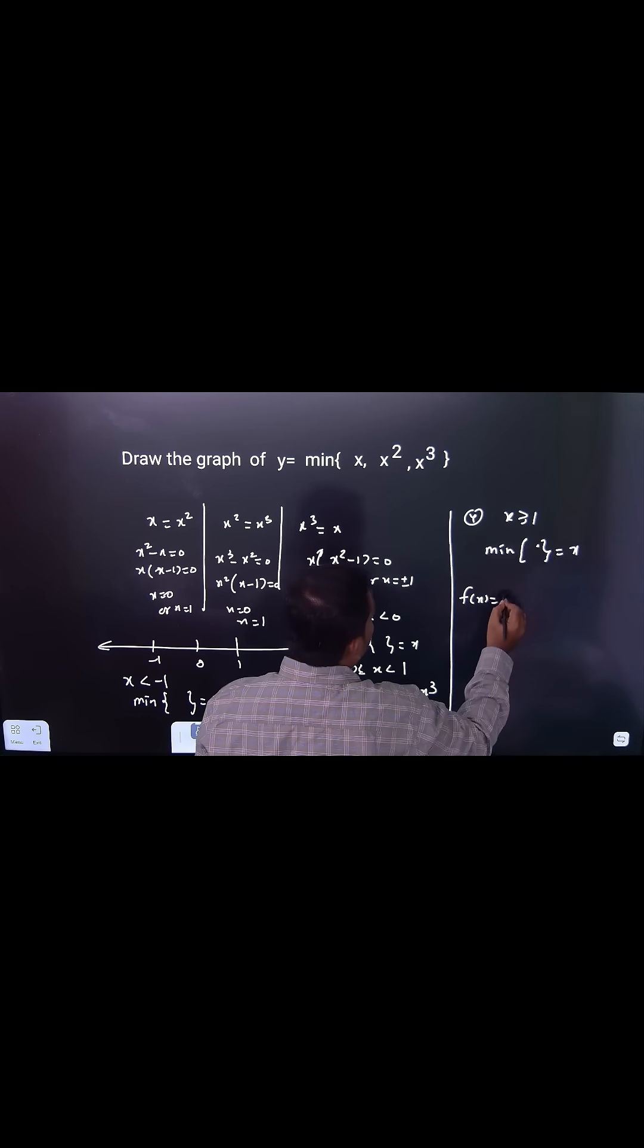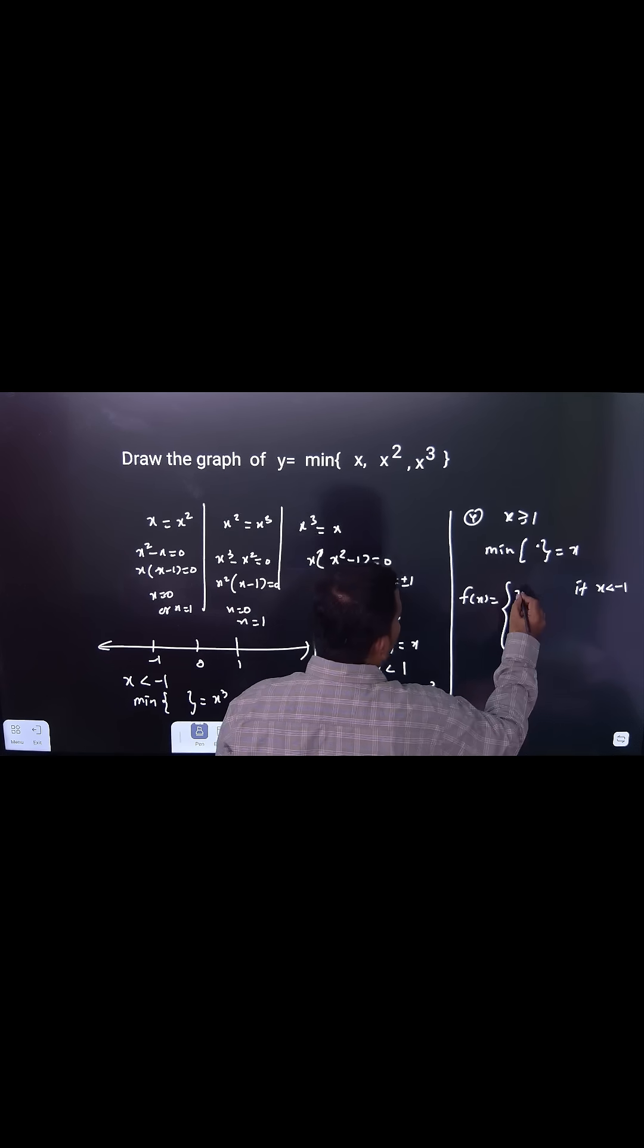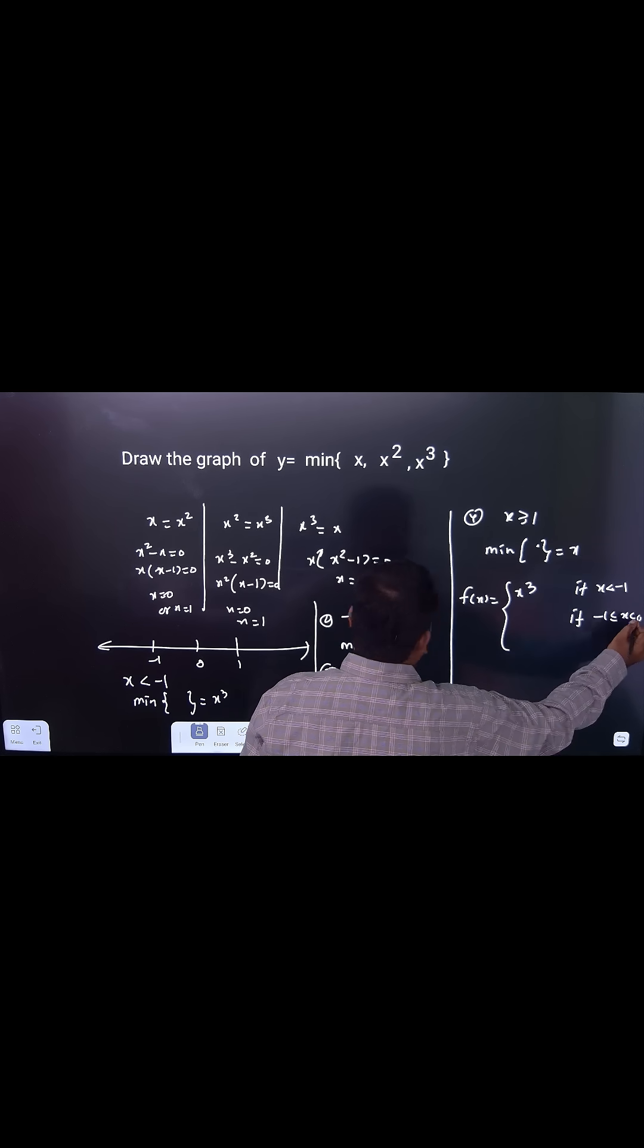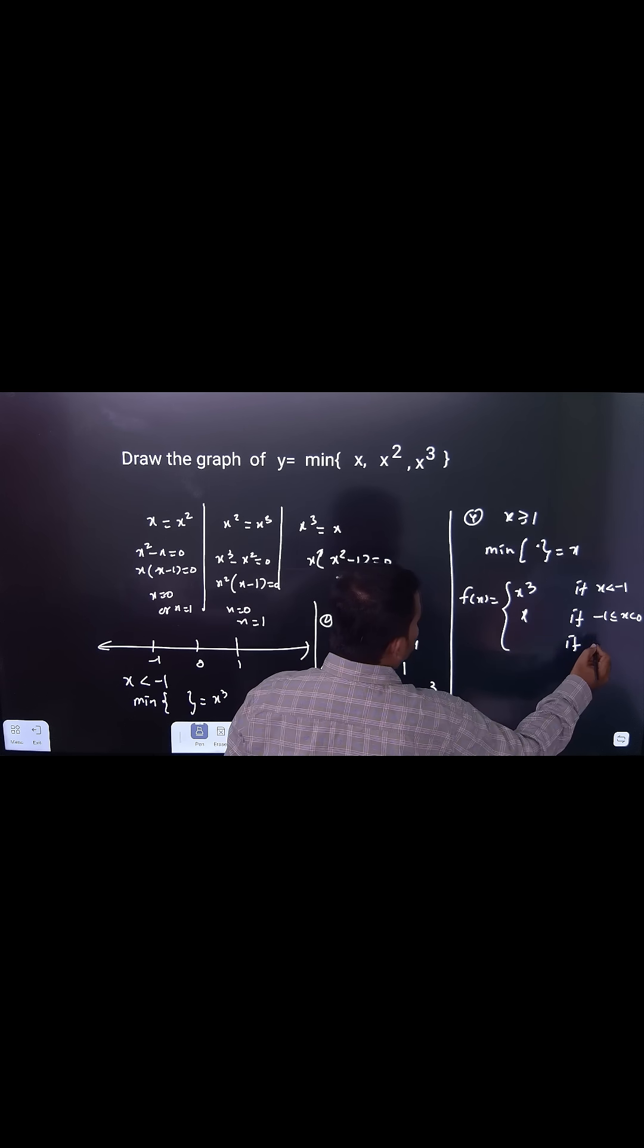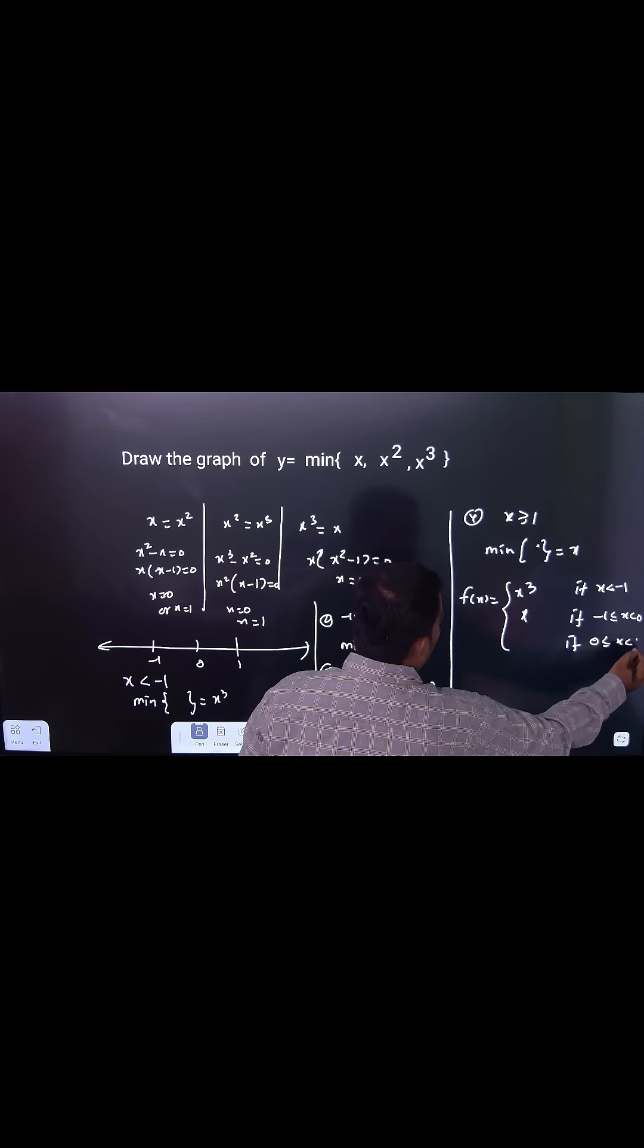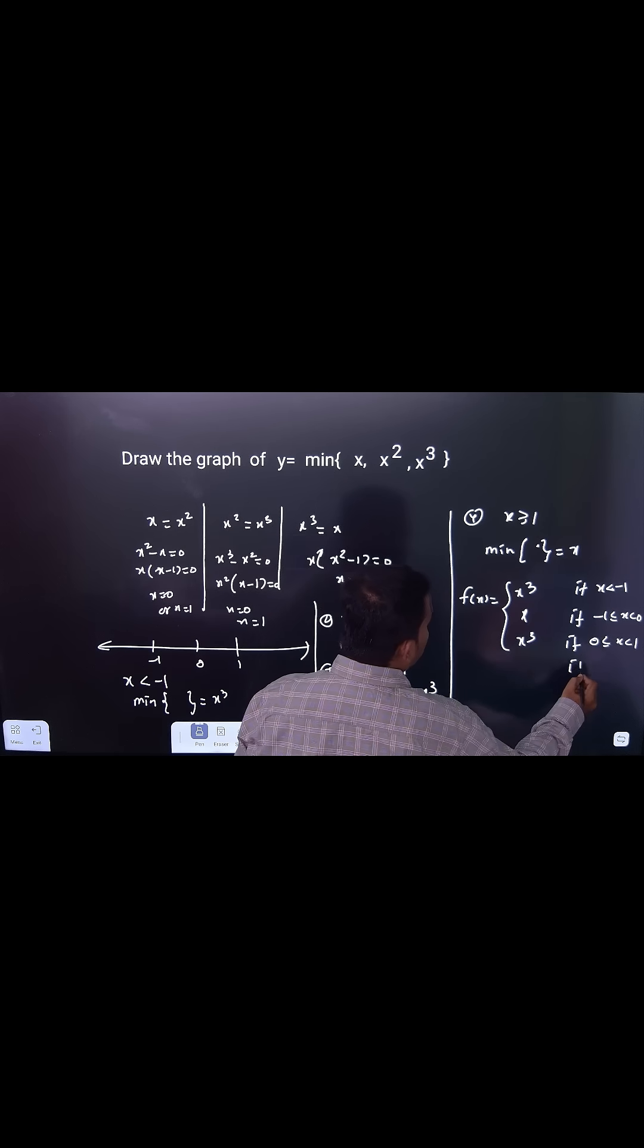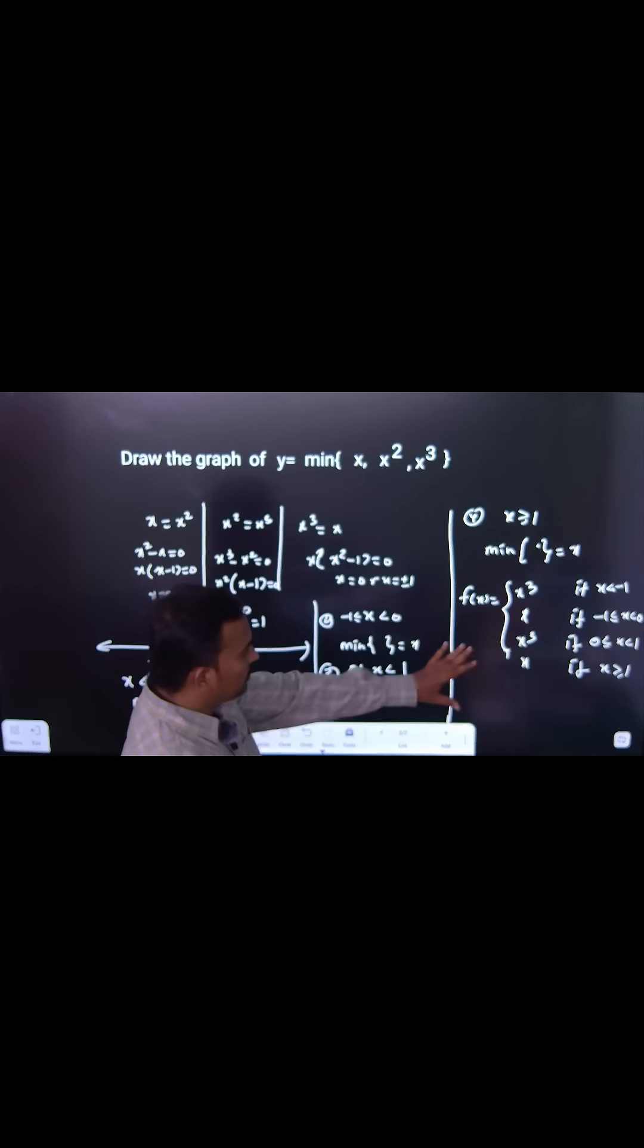You rewrite the function: if x is less than minus 1, the minimum is x cube. If x is minus 1 to 0, the minimum is x. If x is 0 to 1, the minimum here is x cube. If x is greater than or equal to 1, the minimum is x. This is your function.